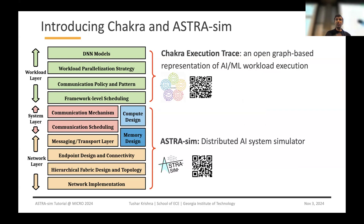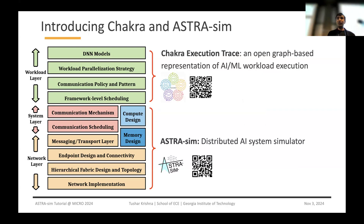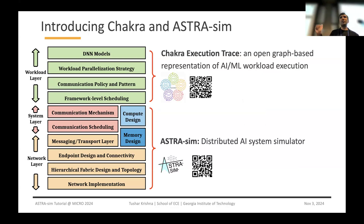The first is on the workload layer side of things, which is called Chakra Execution Traces. This is an open graph-based representation of the AI/ML workload execution. The second is AstraSim, which is a distributed AI system simulator that essentially tries to model the rest of the system — given the workload, it tries to model compute, network, and memory.